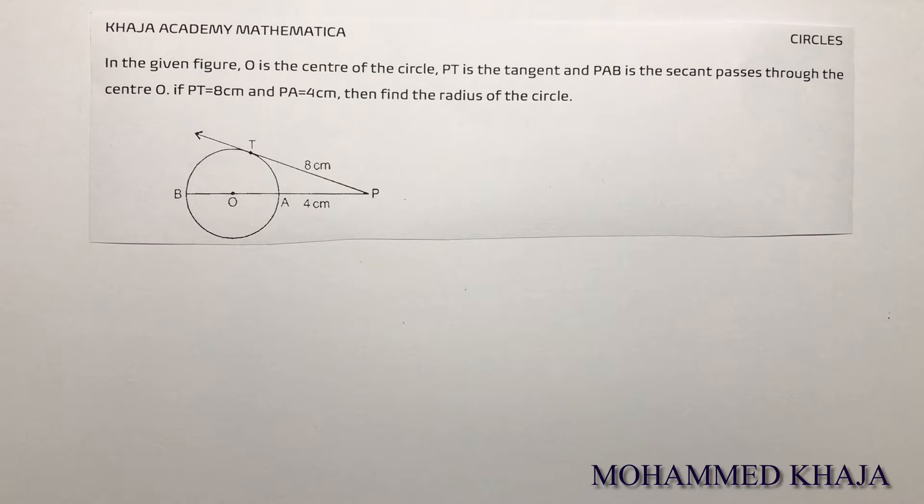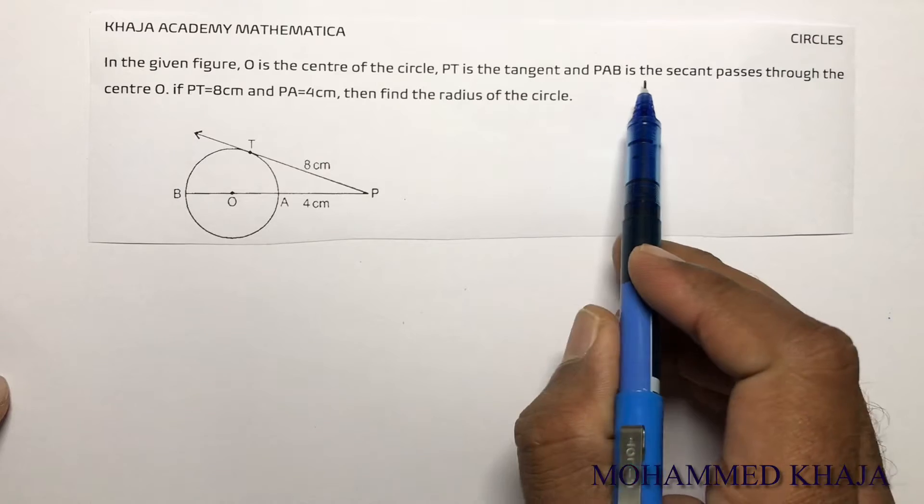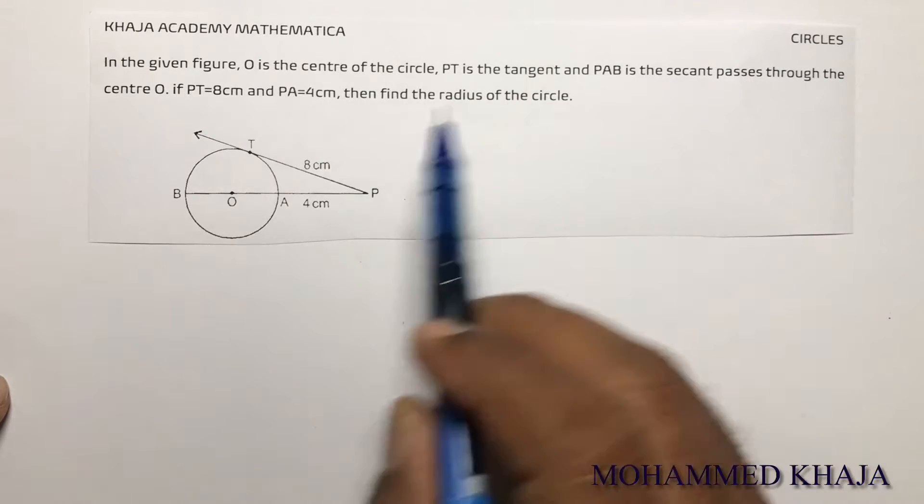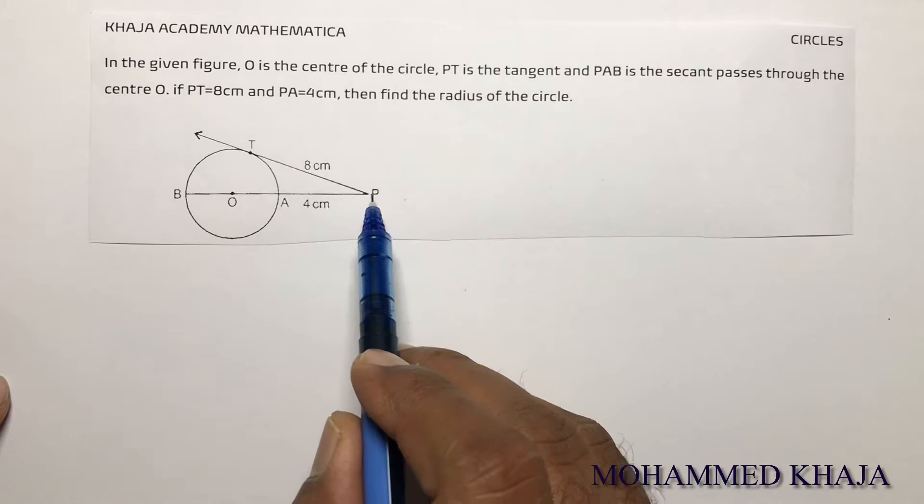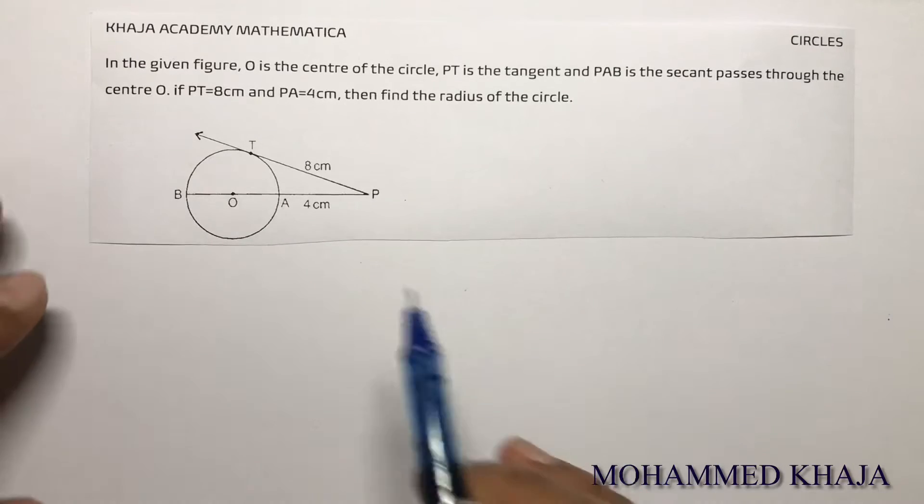In the given figure, O is the center of the circle, PT is the tangent and PAB is the secant passes through the center O. PT is 8 centimeters, PA is 4 centimeters. Find the radius.